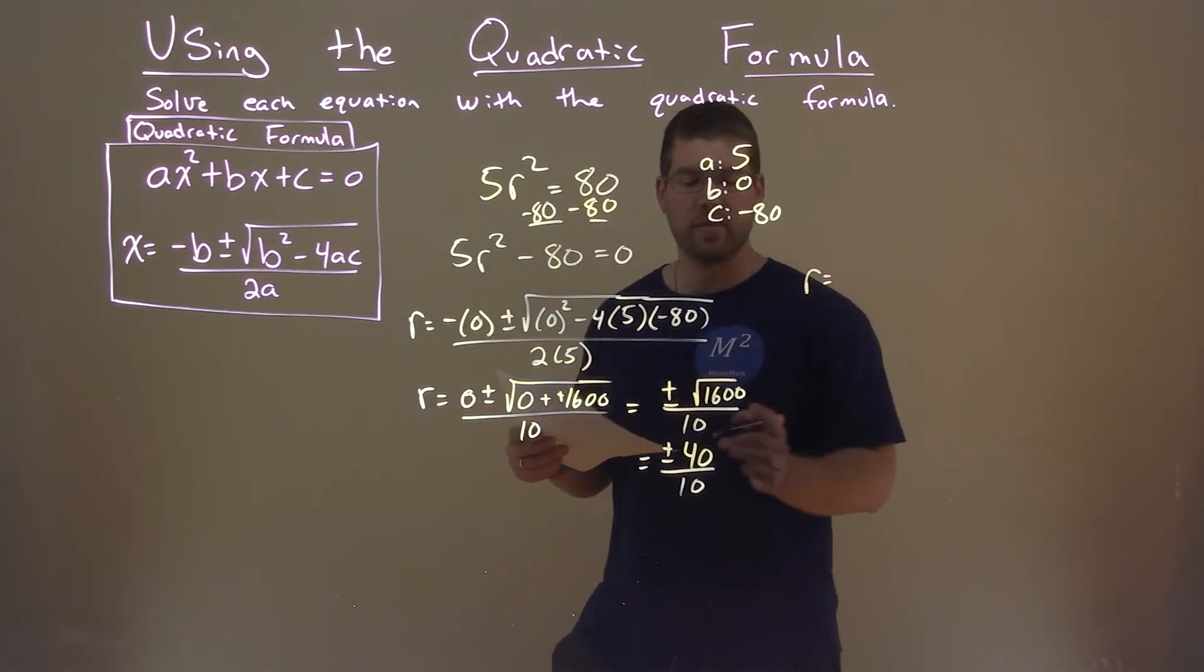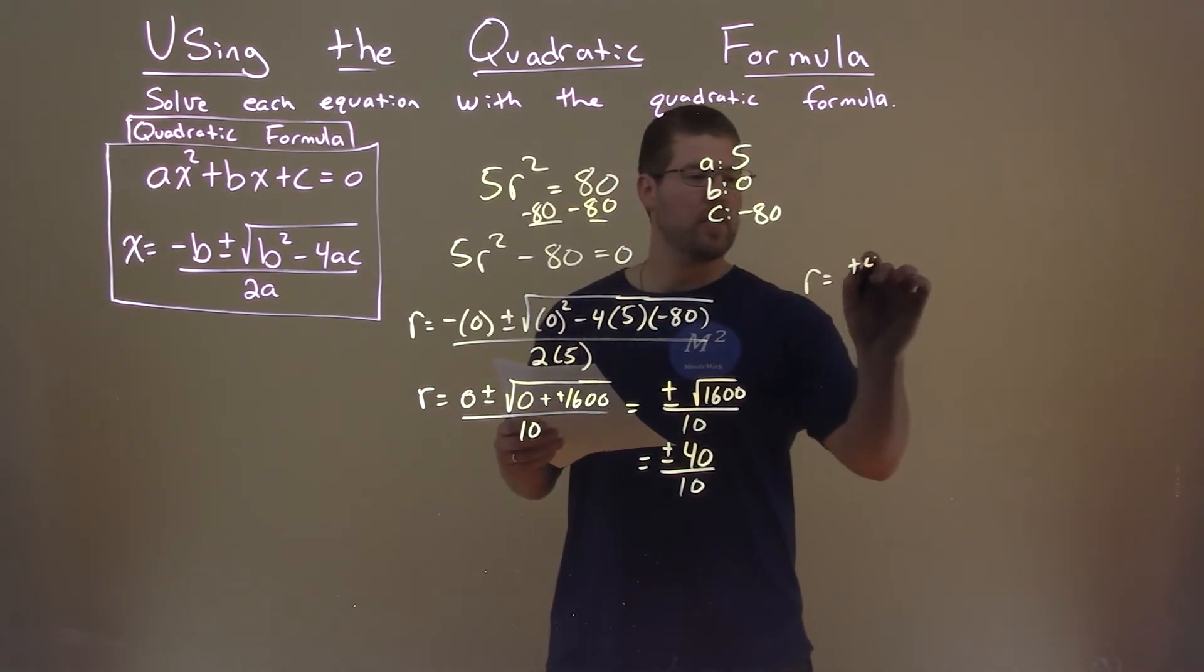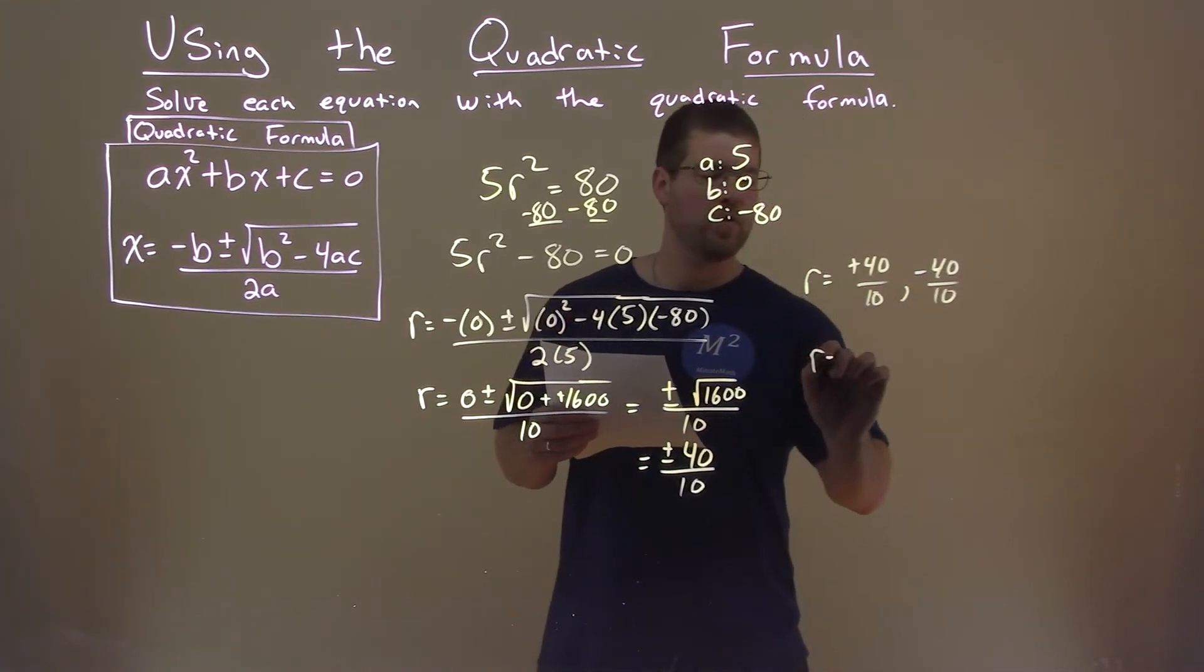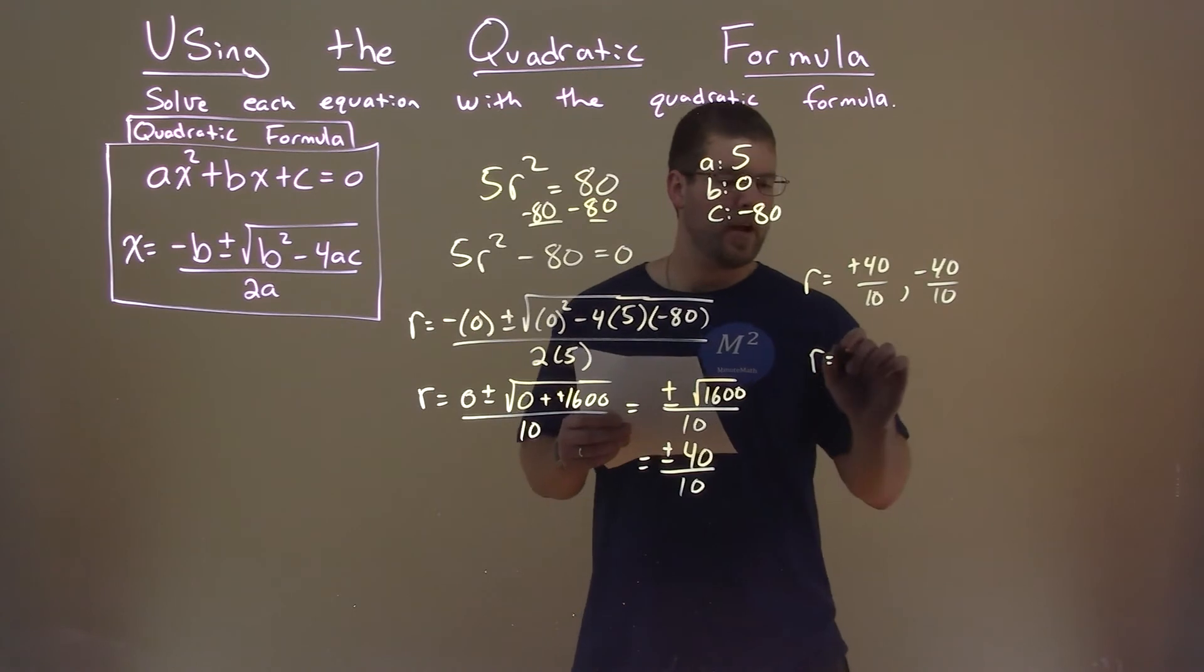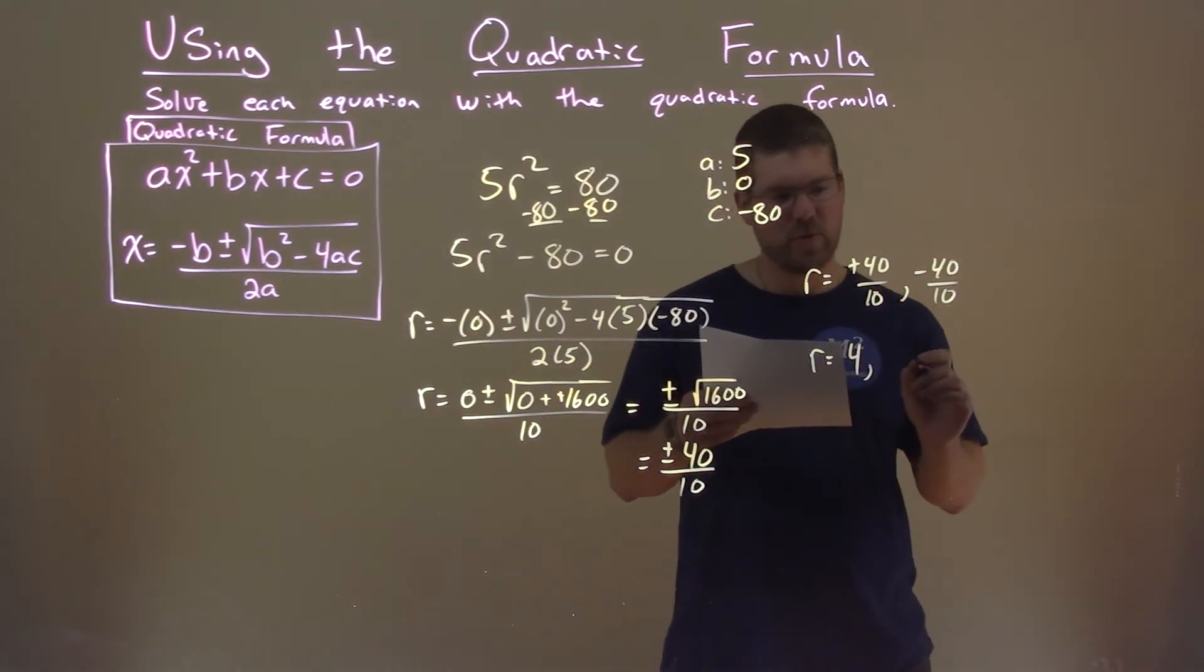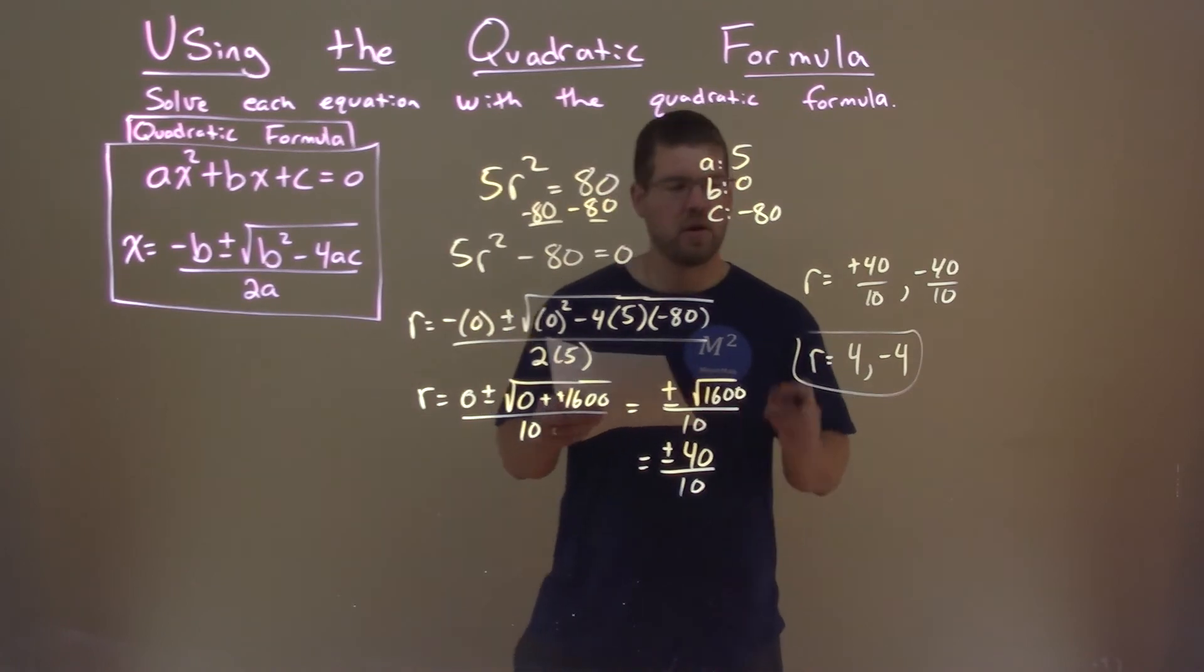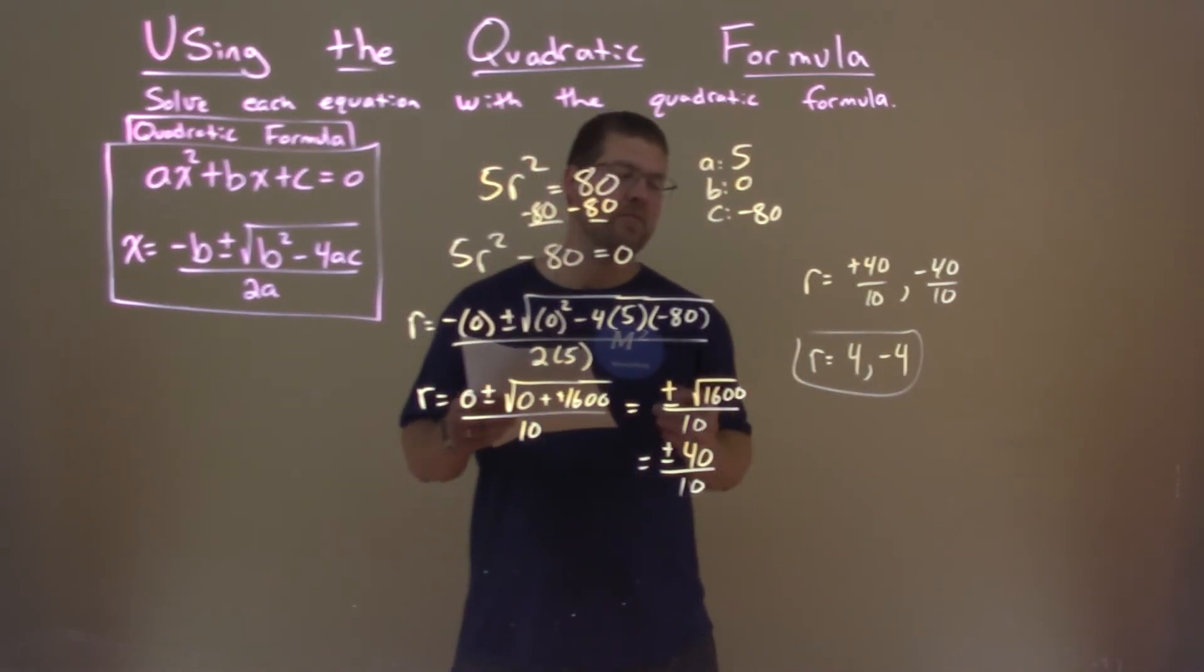So we have plus or minus 40 over 10. Let's break that up into two parts. Positive 40 over 10, and minus 40 over 10. Hopefully, you can simplify that. 40 divided by 10 is 4, and negative 40 divided by 10 is negative 4. And so our two solutions here are r equals 4 and negative 4.